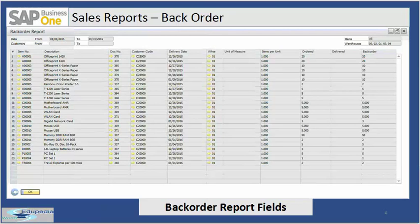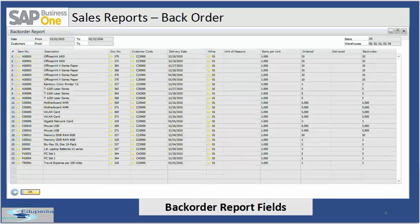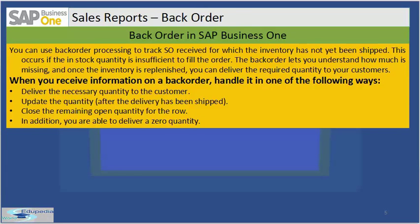Let's take a look at the backorder report fields. There is a delivery date — the date from the row of an expected delivery for an item. Unit of measure — the name of the inventory UOM or sales UOM as defined in the original document. Items per unit — the number of items defined in the original document. Order — your original quantity of items ordered in the sales order. Delivered — what you have already delivered to the customer. Backorder — the remaining quantity you are yet to deliver to the customer.